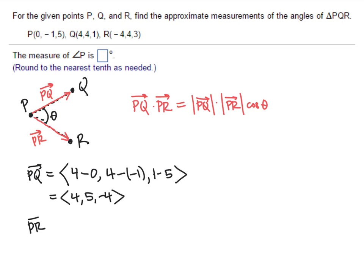And the vector from P to R is the coordinates of R minus the coordinates of P. That's going to be negative 4 minus 0, 4 minus negative 1, and 3 minus 5. That gives us the vector negative 4, comma, 5, comma, negative 2.